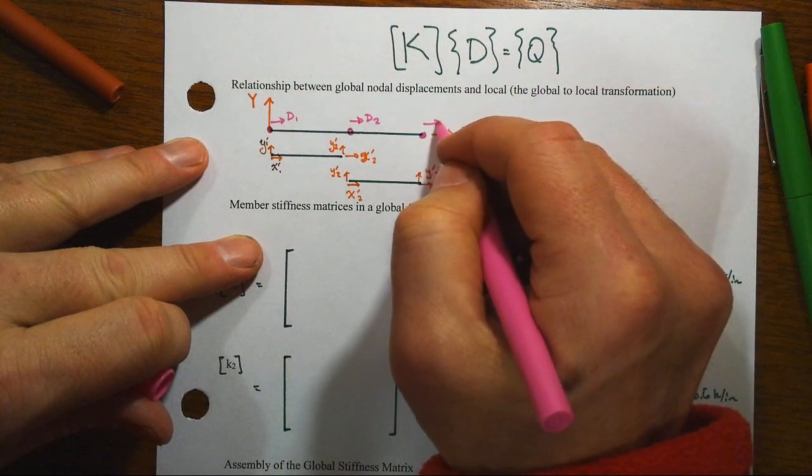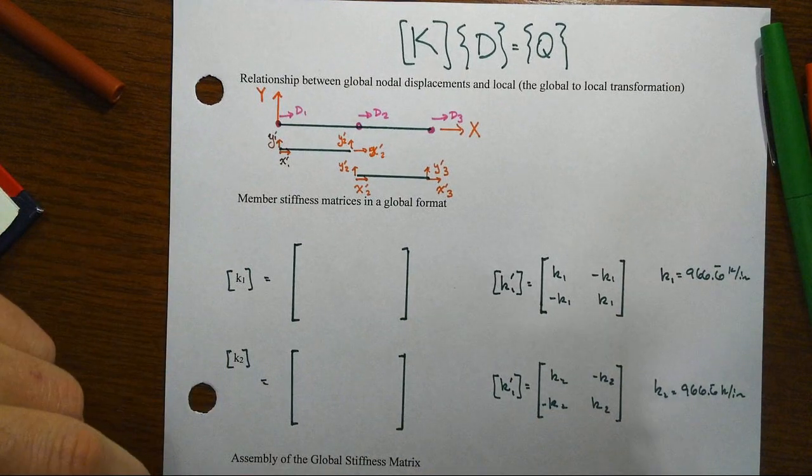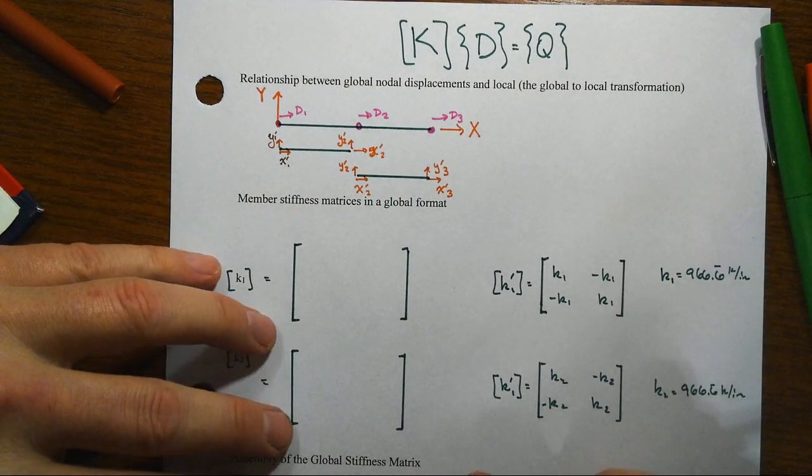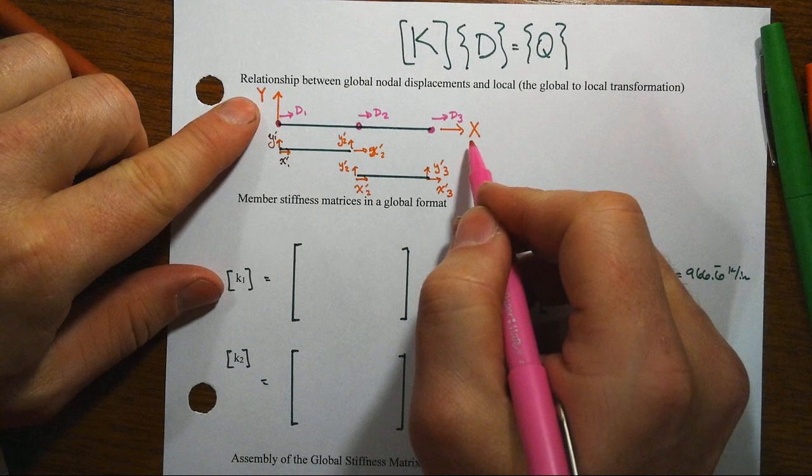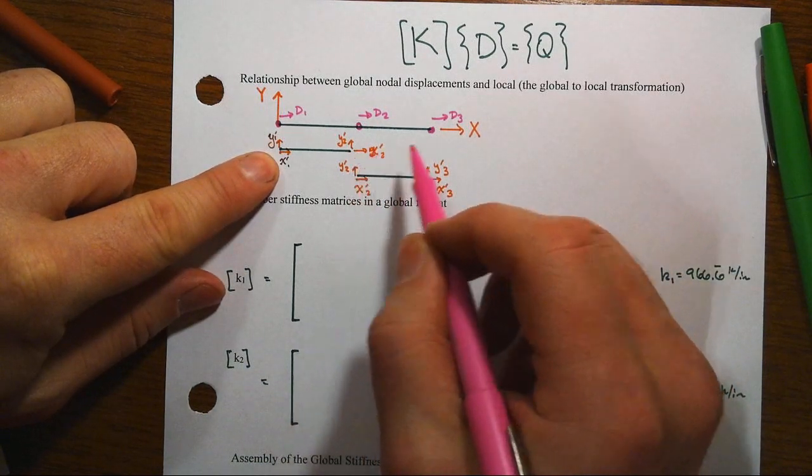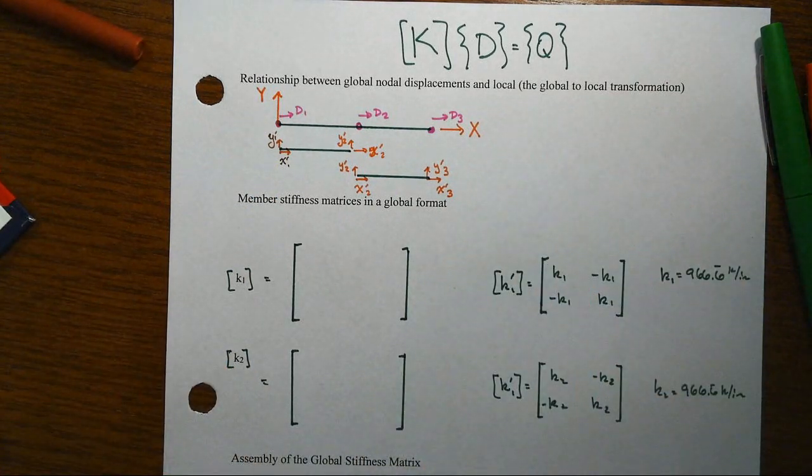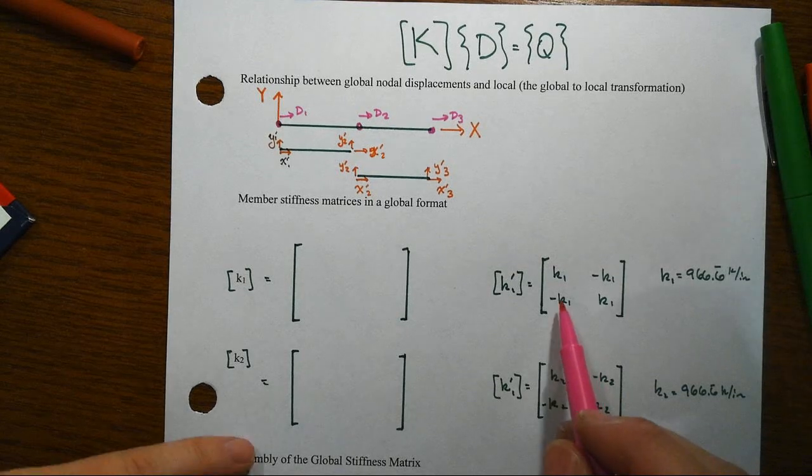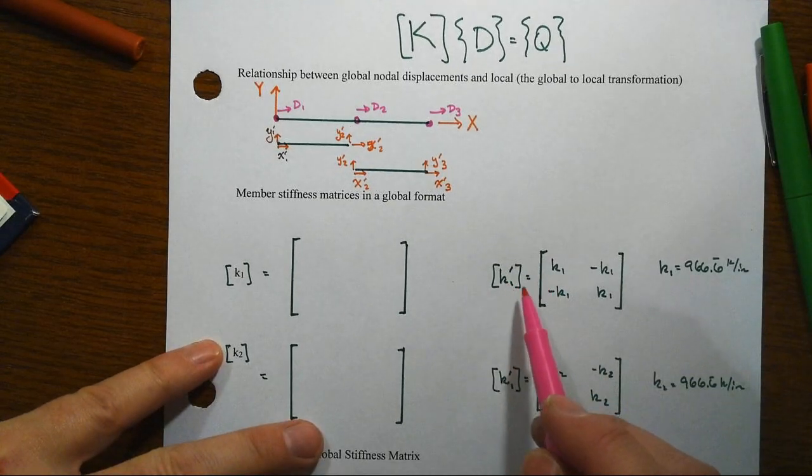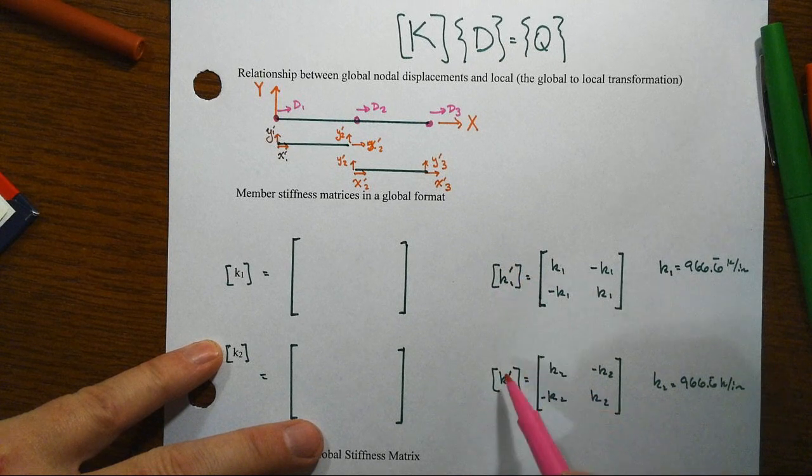Now global system capital letters, local system lowercase, that's a key thing here. And what we want to do is take those member stiffness matrices that we had before that were expressed in the local coordinate system lowercase but with the prime, that's what that really meant was in the local, and transform them into something that's still at the member level but that is in the global format.